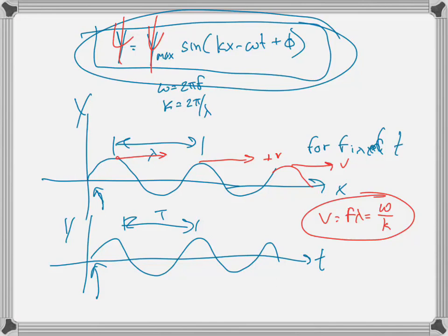How do we know this wave moves in the plus x direction? Well, if we look at a peak and ask what happens as time increases, because there's a minus sign between kx and ωt, x has to increase as t increases in order to keep psi constant. That point at that amplitude has to move to the right — at a later time, that point is going to be over here.